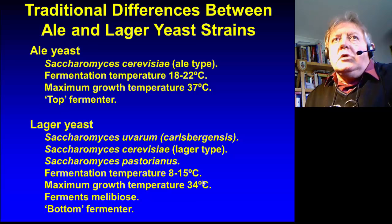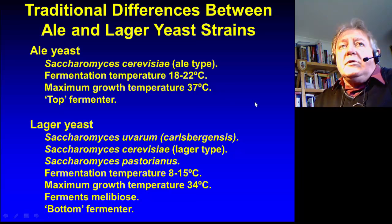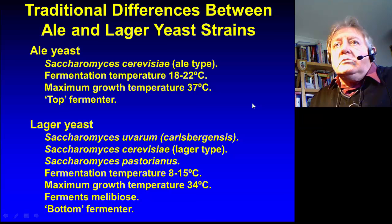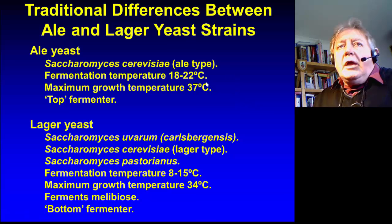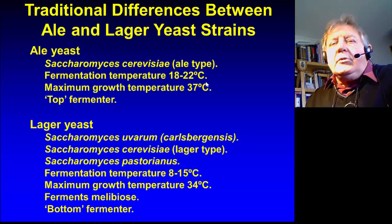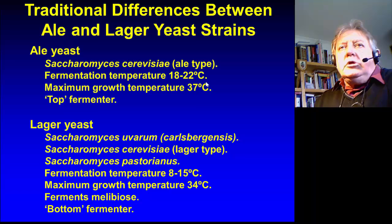The traditional difference between ale and lager strains: ales are contained in Saccharomyces cerevisiae, the ale type. It has a fermentation temperature of 8 to 22 degrees centigrade. Maximum growth temperature is 37 degrees centigrade. And it's what we call a top fermenter — that means at the end of fermentation the yeast rises to the surface, adsorbed to the carbon dioxide bubbles, and this top crop is skimmed and used in a subsequent fermentation.